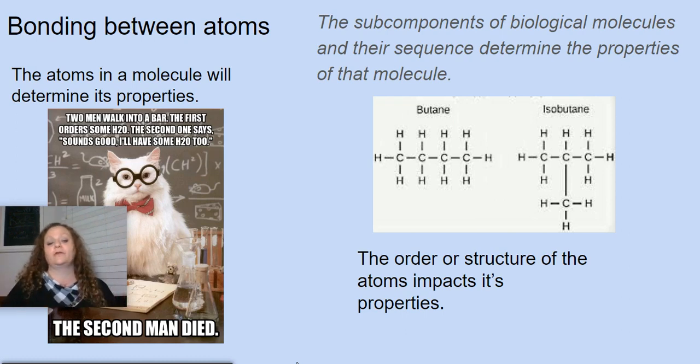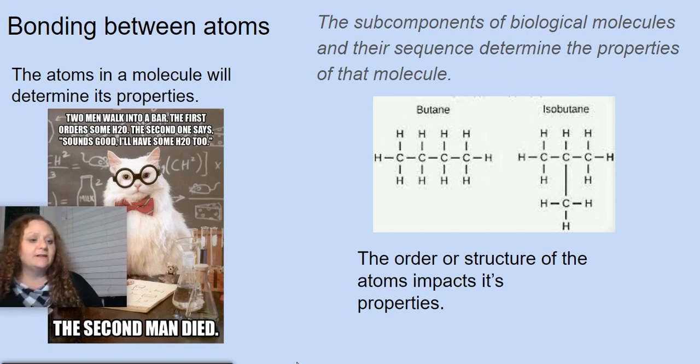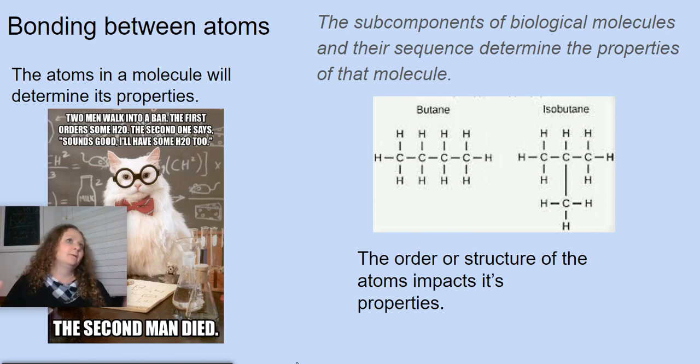The order or the structure of those atoms in the molecule will also affect its properties. So this is the instance for butane and isobutane. They have the exact same chemical formula, but the structure makes a difference. Butane and isobutane actually have different properties. Butane's used in things like lighters—it's flammable. Isobutane is actually used in refrigerants to help things get cold. So they have very different qualities, different properties, because the structure is different.